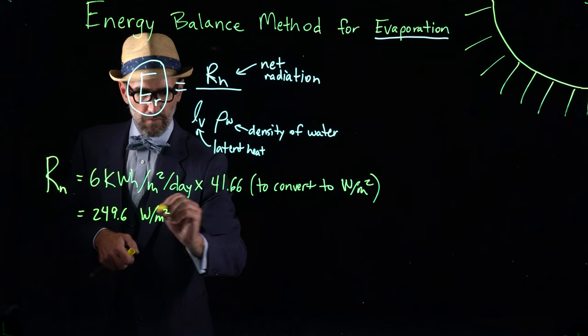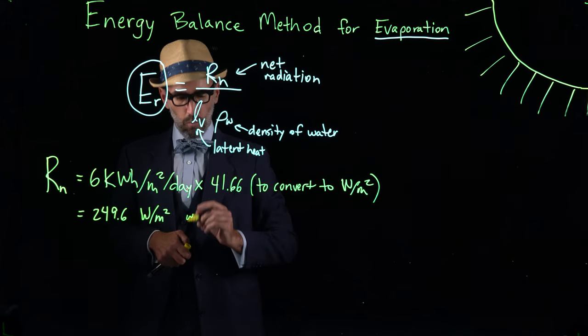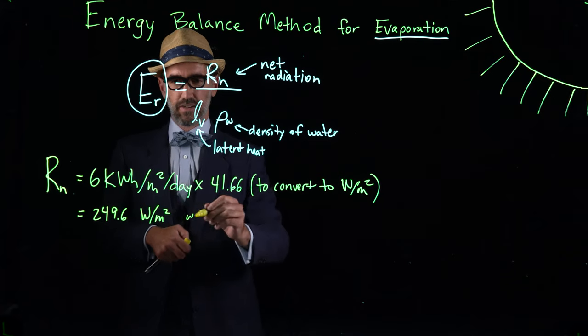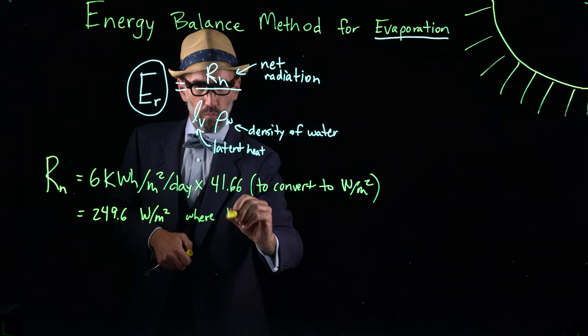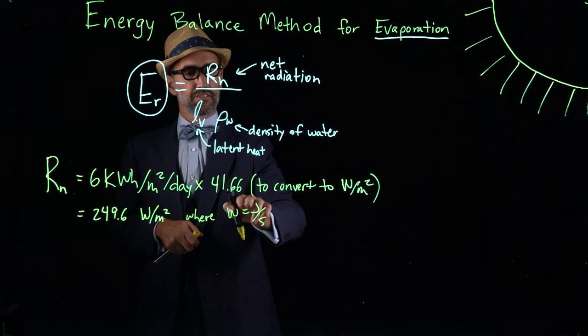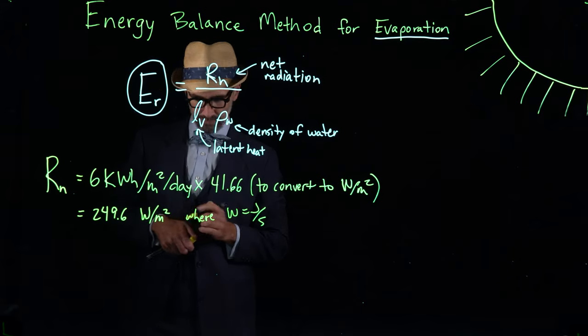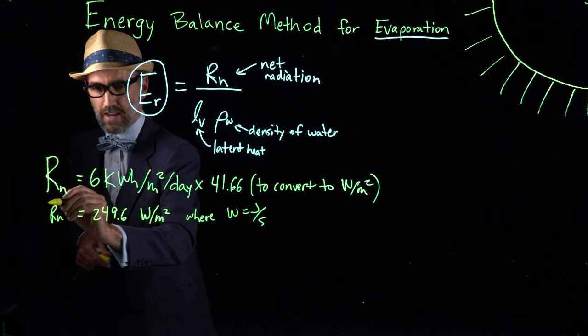And what we get then is that R of N is equal to 249.6 watts per meter squared. Just as a reminder of units, a watt per meter squared, a watt is the same as a joule per second. So this watt per meter squared is joules per second meter squared. So that's our first variable, R of N.